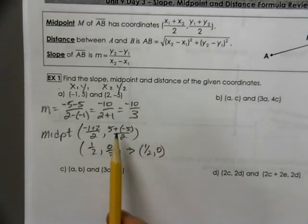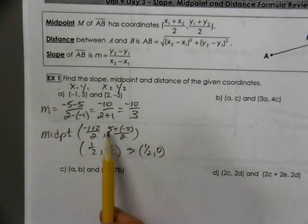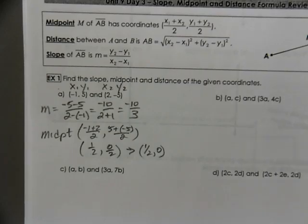Anytime you have a 0 in the numerator, then you know that the fraction itself is going to be calculated as a 0.